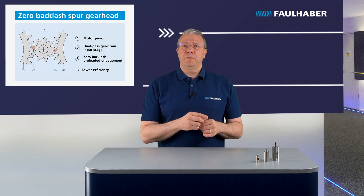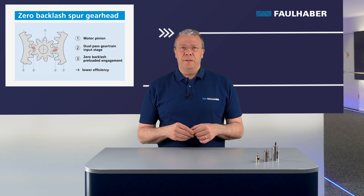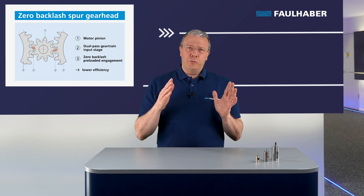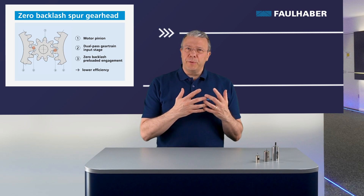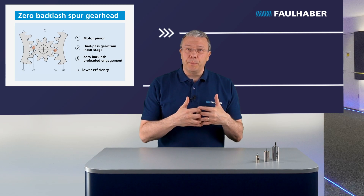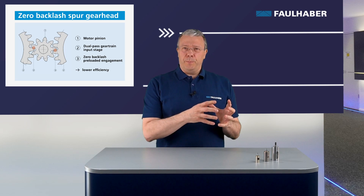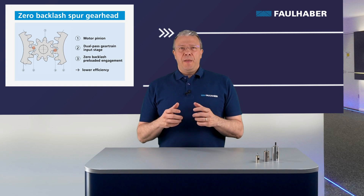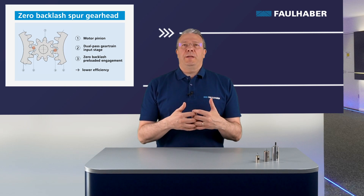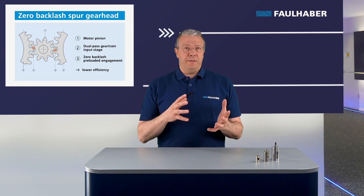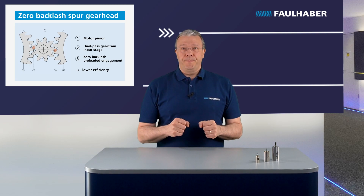A special gear head design is the zero backlash gear head, where two parallel spur gear trains have all the gears pre-loaded with the output shaft blocked. This is to get zero play at the output shaft. The pre-load of every gear train increases the friction, dramatically decreasing the efficiency in this type of gear head.